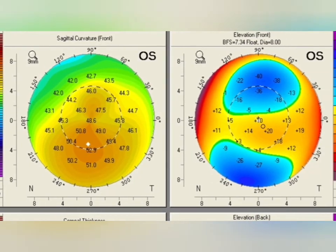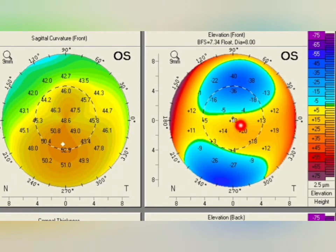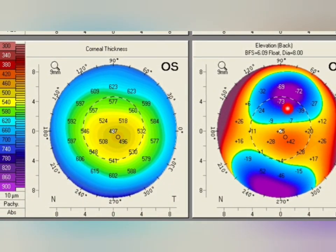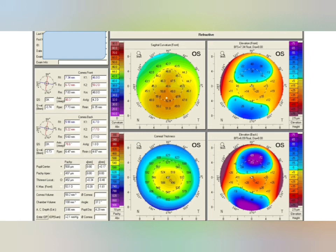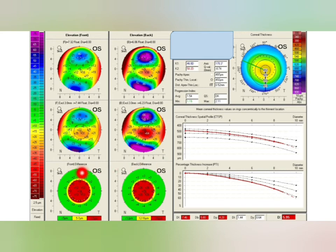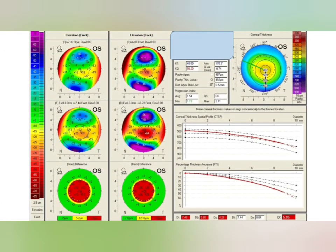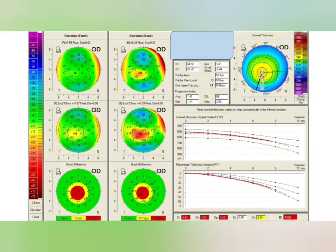In elevation front the thinnest point corresponding value is plus 20 — more than plus 8 — absolutely abnormal. The elevation back shows values like plus 28 or minus 73, all abnormal. Corneal thickness at the thinnest local is 497 — in normal range — but other parameters like elevation front and back, sagittal curvature, and Kmx all indicate an ectatic condition. In the Belin-Ambrósio map it is clearly indicating keratoconus: the red line deviates before 2mm, the average value is 1.54, and the D value is 5.95 — all abnormal — confirming keratoconus.